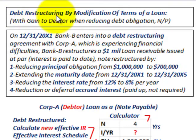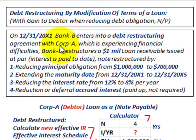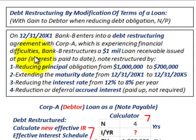We're going to be looking at debt restructuring by modification of terms of a loan, for the example where we've got a gain to the debtor when reducing some debt obligation or notes payable. On 12/31/20X1, Bank B enters into a debt restructuring agreement with Corporation A, which is experiencing financial difficulties. Bank B restructures a one million dollar loan receivable with Corporation A, which was issued at par and has interest paid up to date.